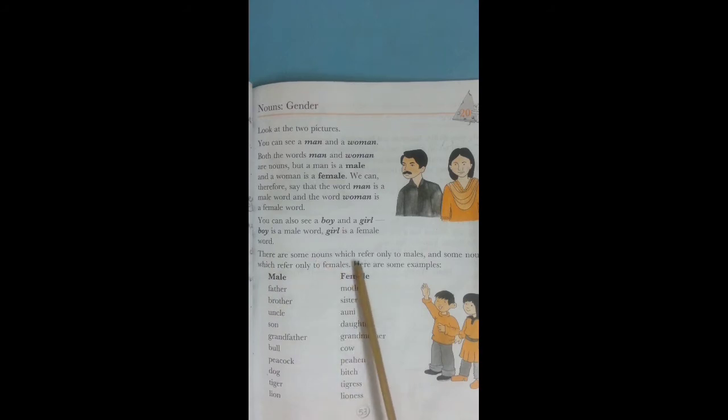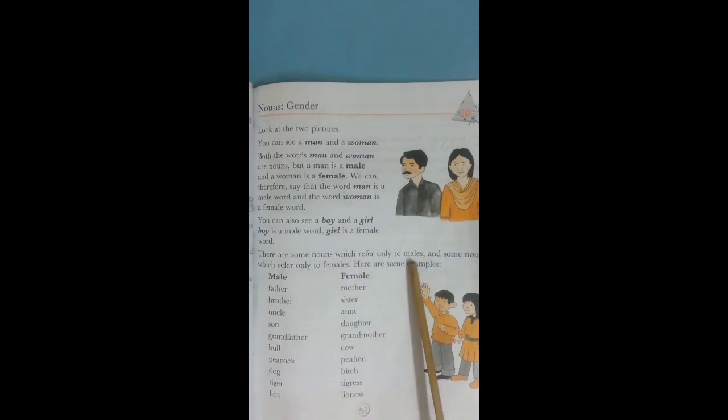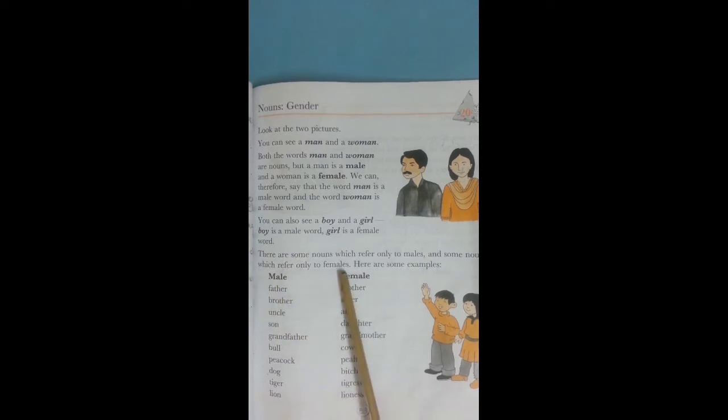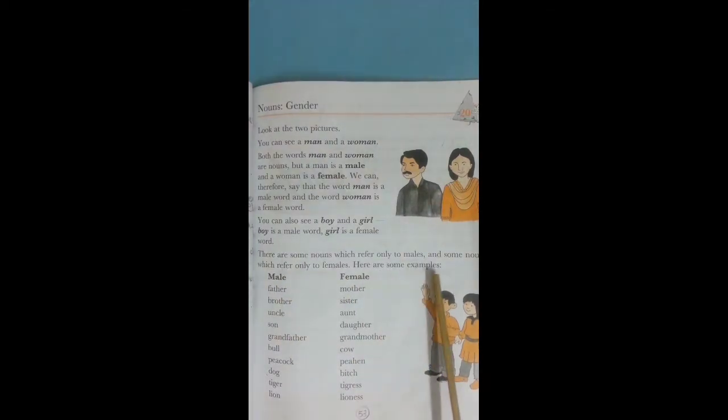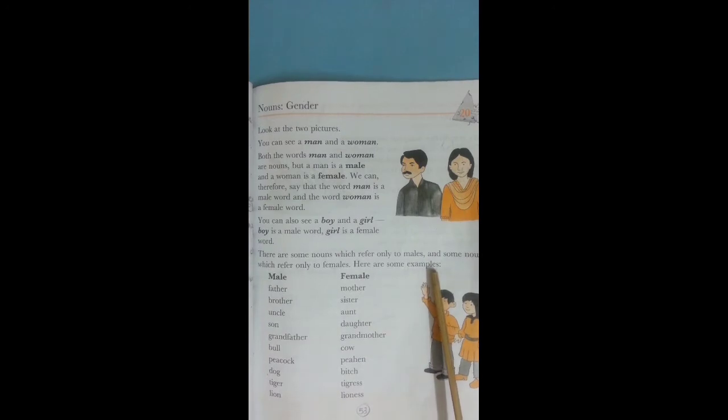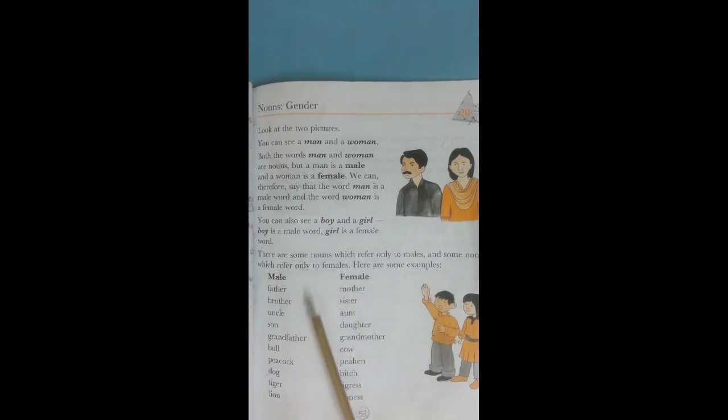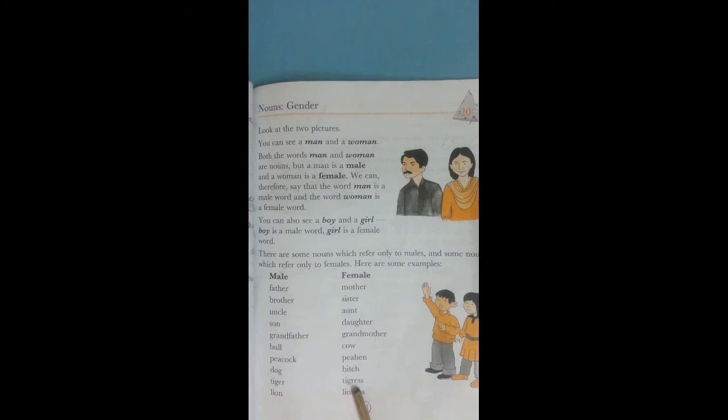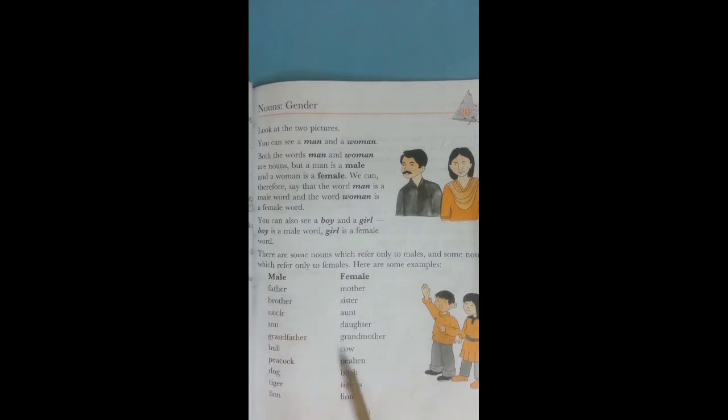There are some nouns which refer only to males and some nouns which refer only to females. Here are some examples. Now let's look at a list of male and female words, masculine and feminine. Mostly we already learned these words in our previous class.